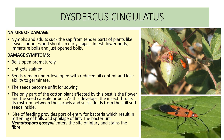Damage symptoms: bolls open prematurely, lint gets stained, seeds remain underdeveloped with reduced oil content and lose ability to germinate, and the seeds become unfit for sowing. The only part of the cotton plant affected is the flower and seed capsule or boll. As this develops, the insect thrusts its rostrum between the carpels and sucks fluid from the still-soft seeds inside. The site of feeding provides a point of entry for bacteria, resulting in rotting of bolls and spoilage of lint.